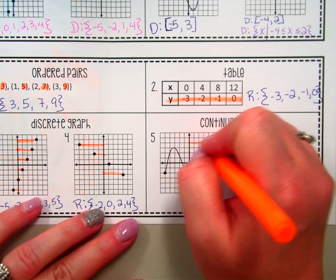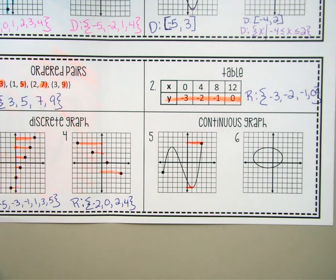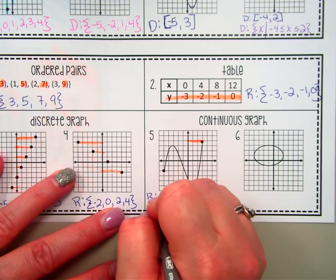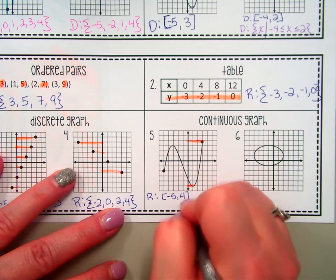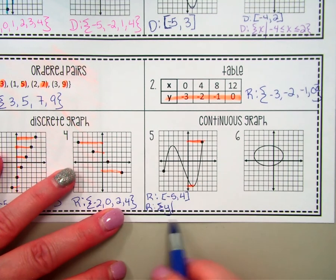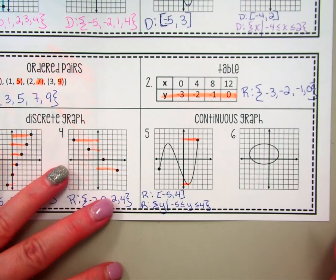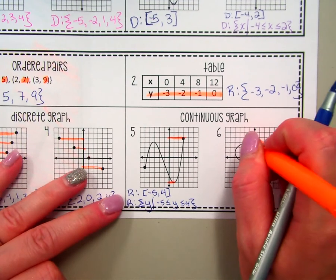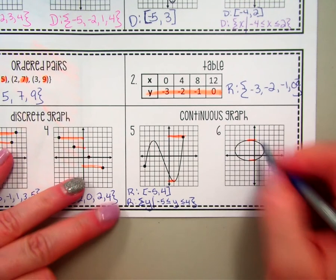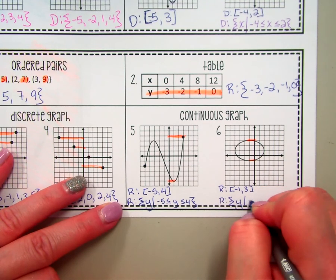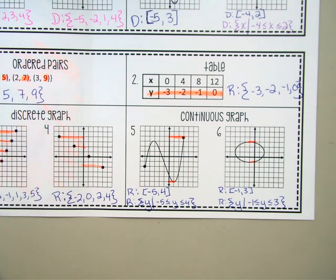For our continuous graphs, you look for the highest and lowest y values. The lowest is negative 5 and the highest is positive 5, so the range in interval notation would be negative 5 to 5. In set builder notation, this time it's Y such that — because we're looking at range, we look at y values. For the ellipse, that goes from negative 1 to 3 in interval notation. In set builder: Y such that negative 1 is less than or equal to Y, is less than or equal to 3. So interval notation, set builder notation, and roster form are all different ways to list your domain or range values.